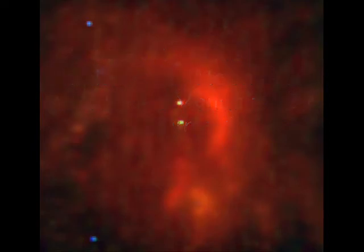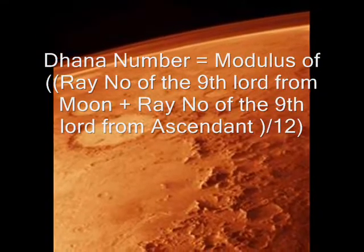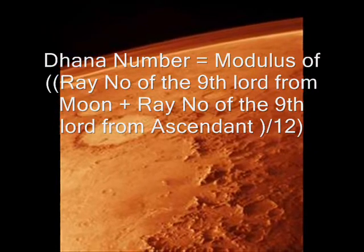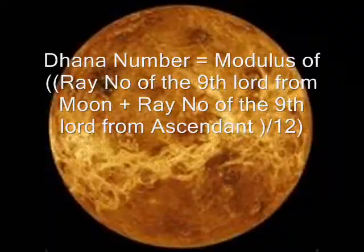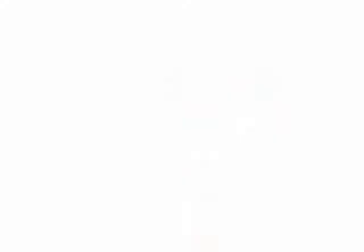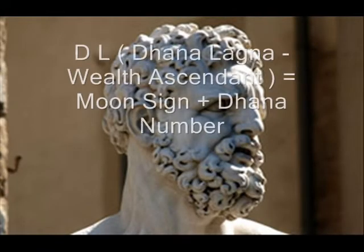The Dhanalagna can be calculated by the formula: Dhanalagna number is equal to the modulus of the ray number of the ninth lot from the Moon plus the ray number of the ninth lot from the Ascendant, divided by 12. Dhanalagna is equal to Moon sign plus Dhanalagna number.